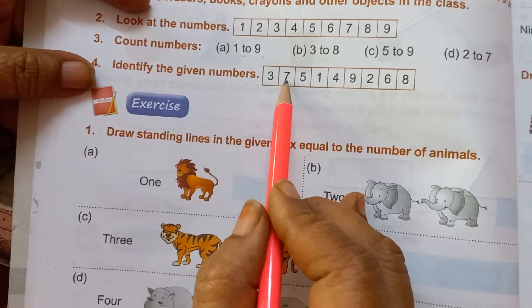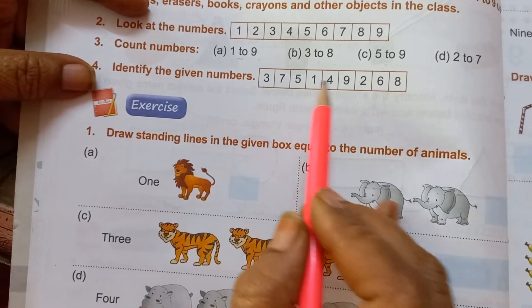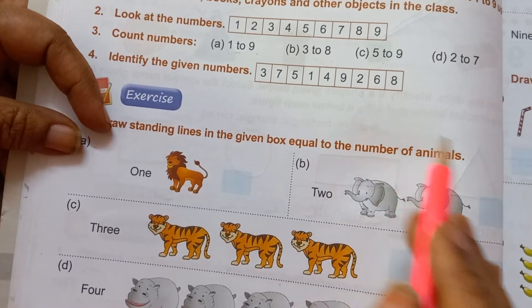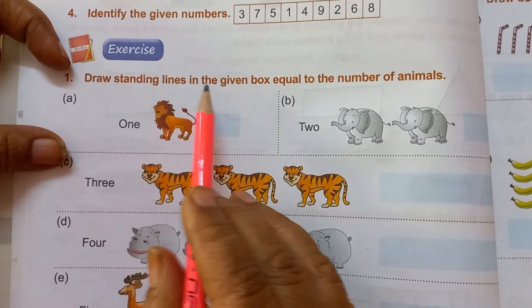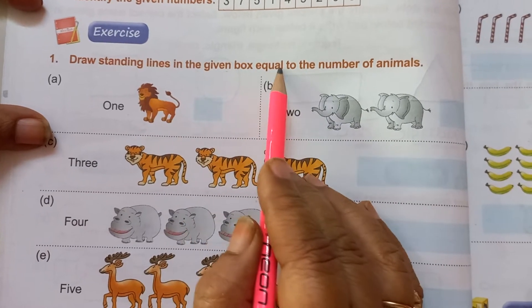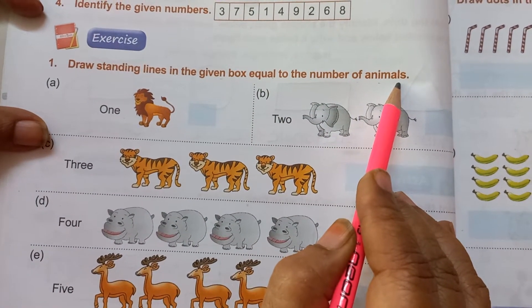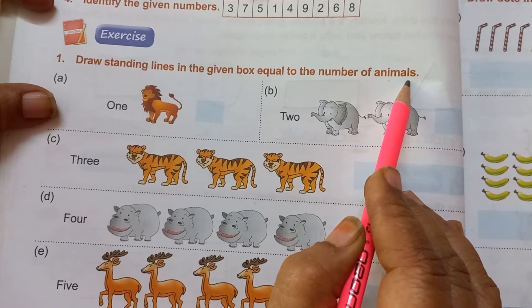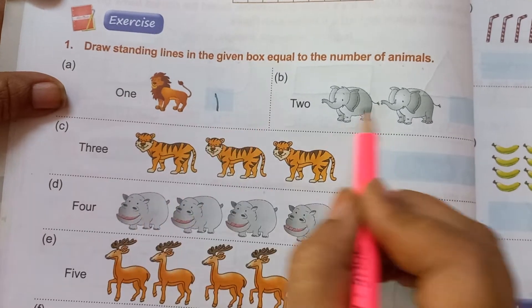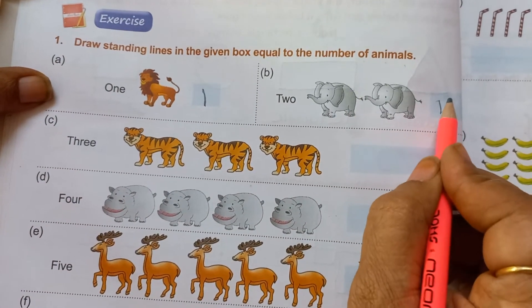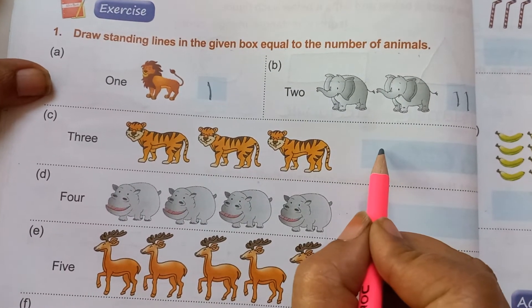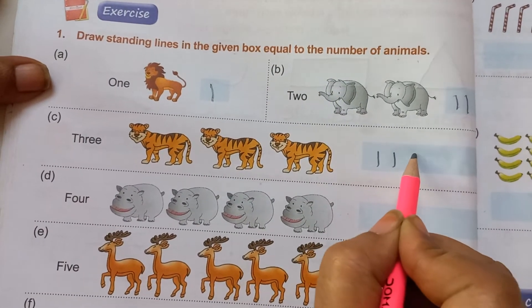Then identify the given number. That means if I ask you to write 7, you can write 7 like this. Then here are some things. Draw the standing lines in the given box equal to the number of animals. First of all you have to count it. One lion is 1, so you have to give 1 standing line. Two elephants, that means 2 standing lines. Here 1, 2, 3 tigers are there. So 1, 2, 3.